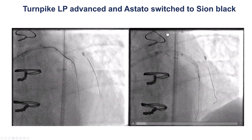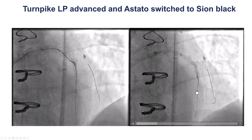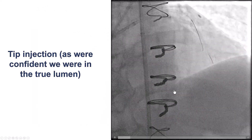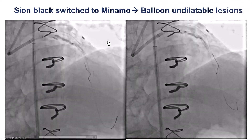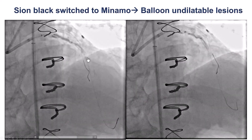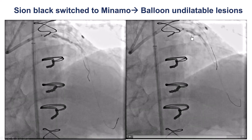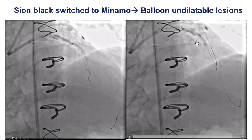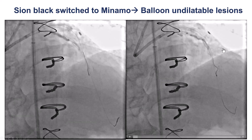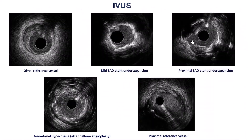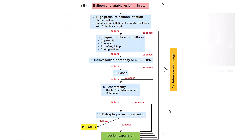We were fairly confident we were in true lumen, but injected a small amount of contrast to confirm. We then switched to a workhorse wire and tried to dilate the lesion, but not unexpectedly encountered another problem: the balloon would not expand. So we had wire-impenetrable, microcatheter-uncrossable, and now balloon-undilatable in-stent lesion. We performed intravascular ultrasound, and the still frames showed calcification and stent under-expansion inside the previous stent.